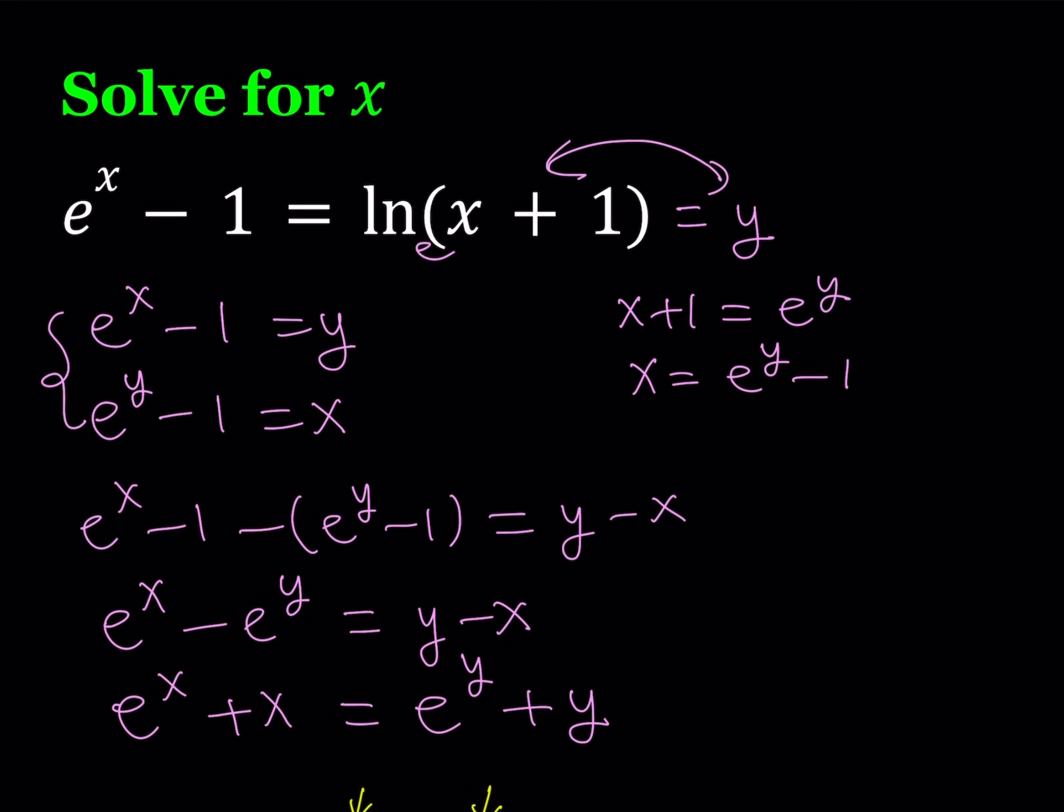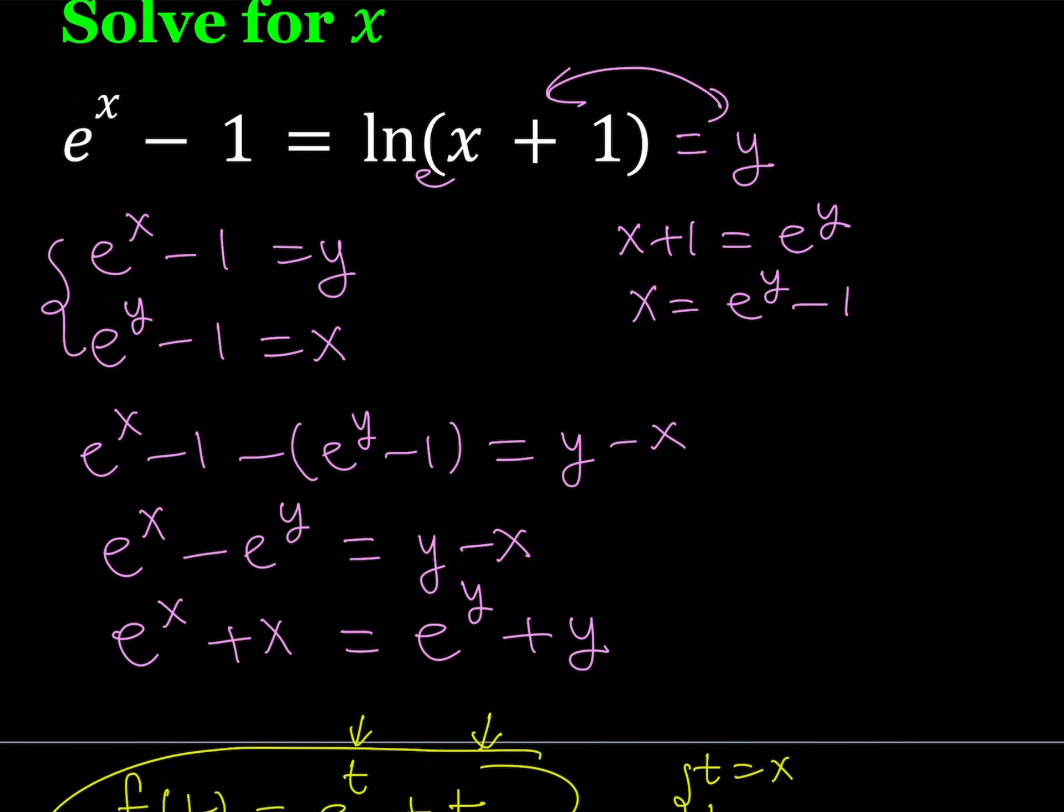Okay, let's take a look at the original problem. And it is e to the power x minus 1 equals ln x plus 1. So if you replace x with 0 here, you're going to notice that e to the power 0 minus 1 equals ln 0 plus 1 gives us 1 minus 1, which is 0, equals ln 1, which is 0. So we got a solution, but that is the only solution that works.